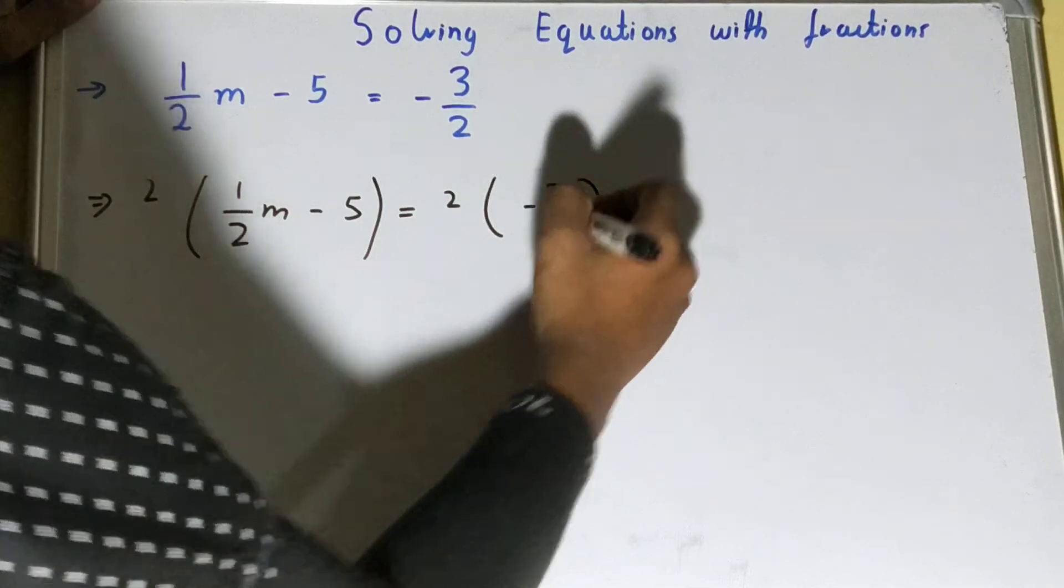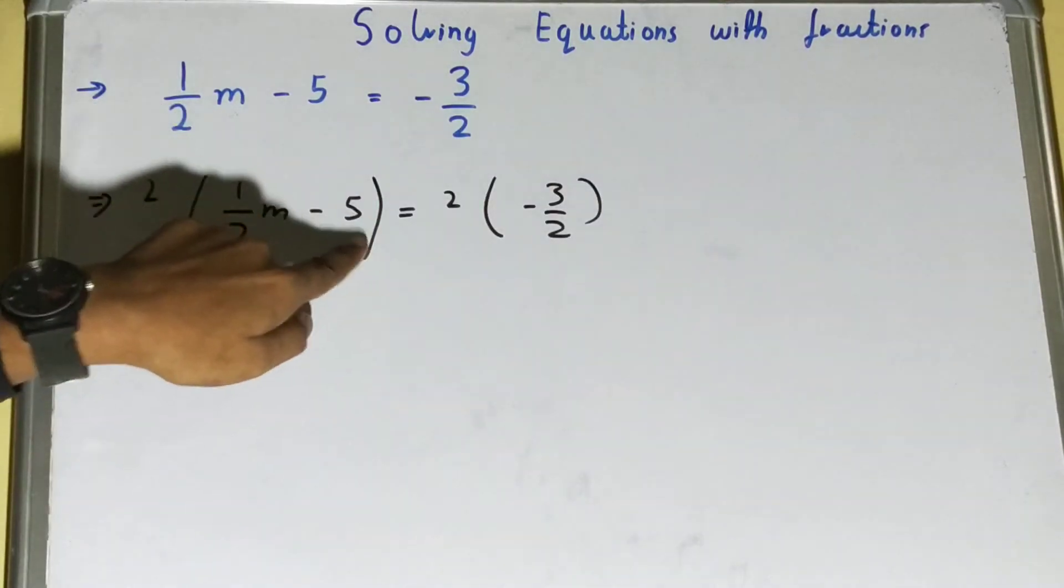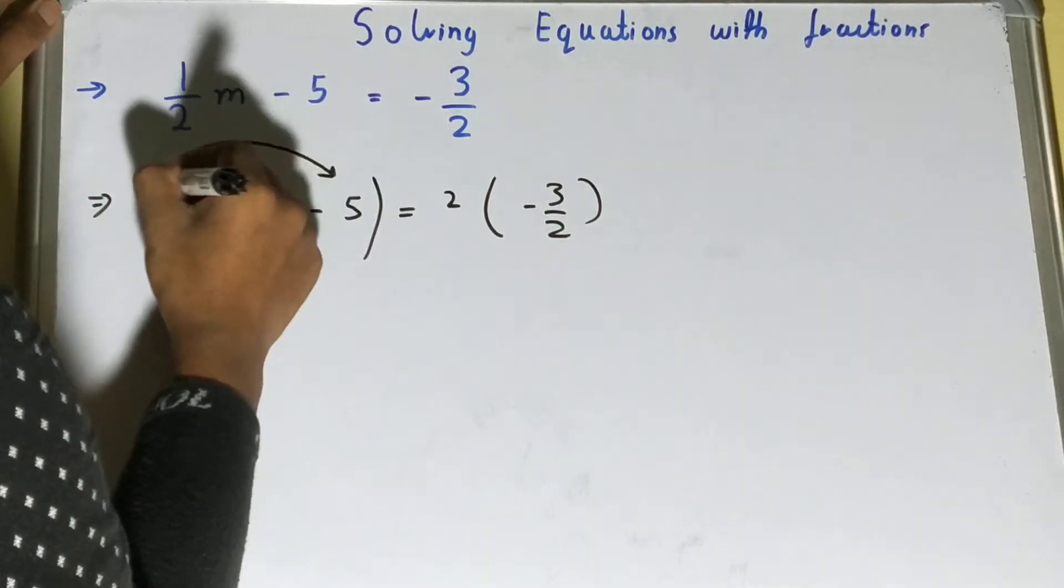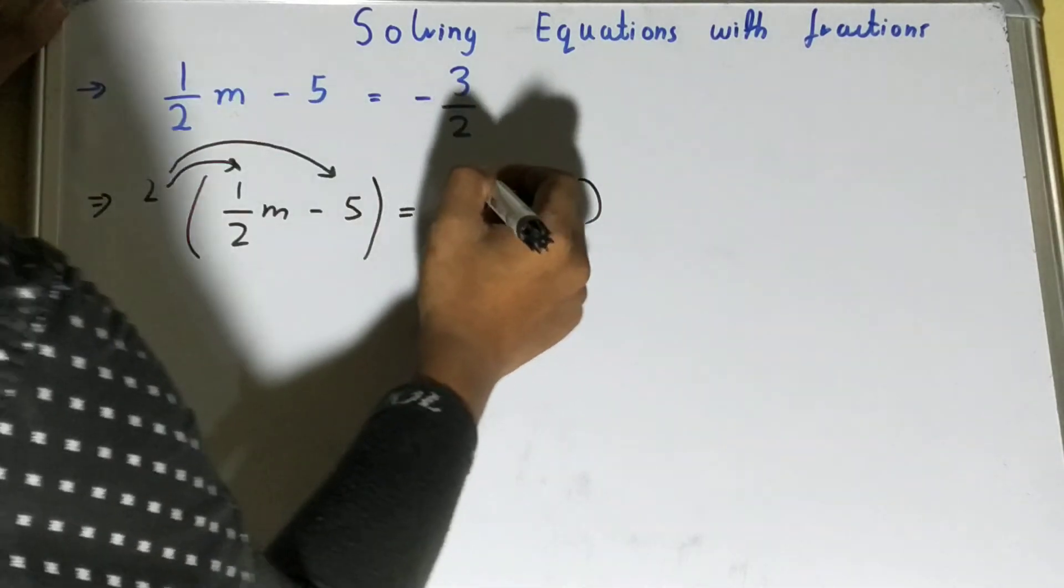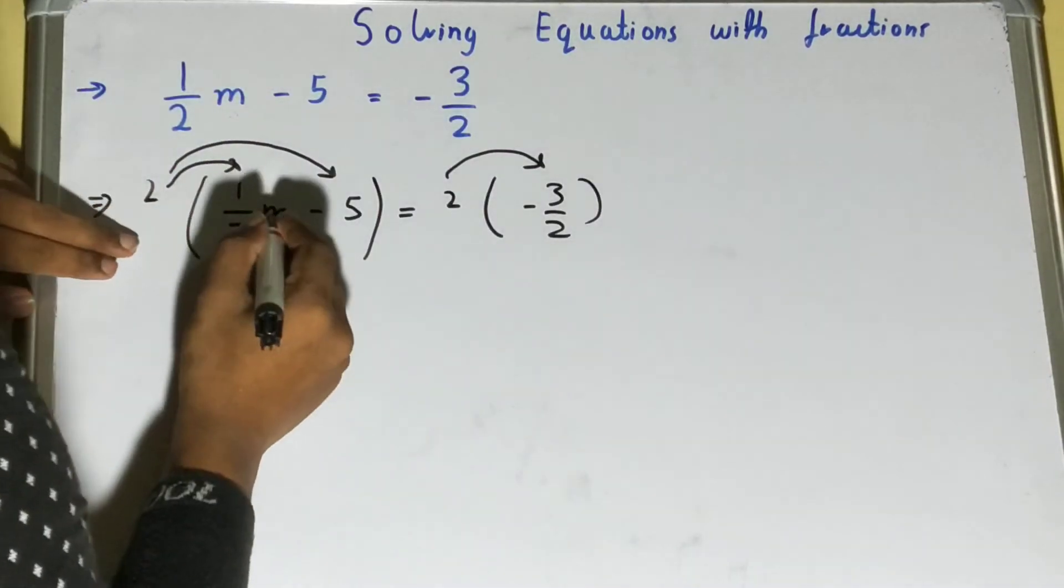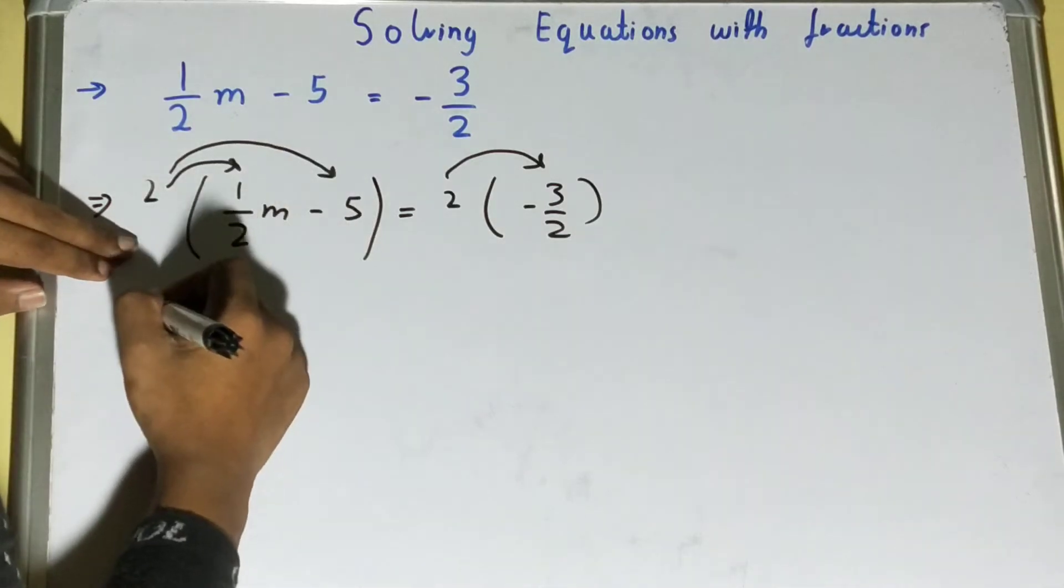One thing you notice here is that we have two terms. This two will be multiplied with these two terms separately, okay? Here we have only one, so it will be one. Upon multiplying it with this term, it will become M.